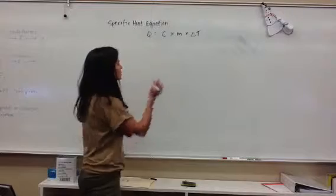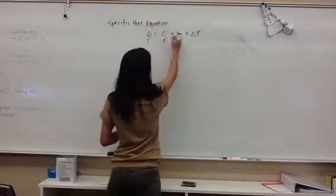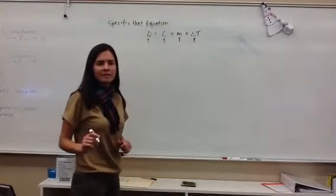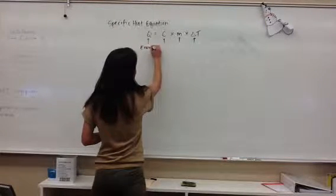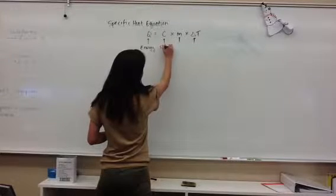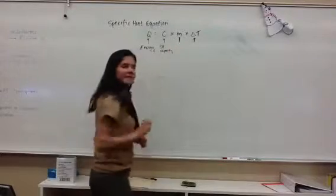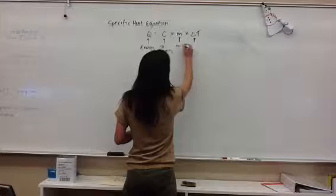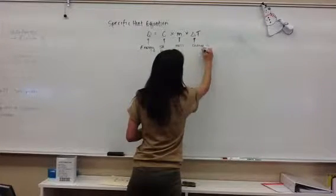Let's review first what each of these variables mean. In your head, can you say what Q, C, M, and delta T mean? Well, hopefully you've already identified that Q is energy. C is specific heat capacity. It's a constant that you have to look up or solve for. M is mass. And delta T is change in temperature.